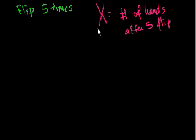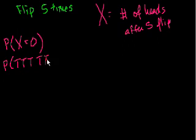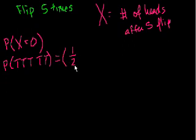Let's think about the different probabilities of getting different numbers. What is the probability that X is equal to 0? What's the probability that you get no heads after five flips? That's essentially the same thing as the probability of getting all tails. The probability of each tail is 1/2, so it would be 1/2 to the fifth power, which is 1 over 32.